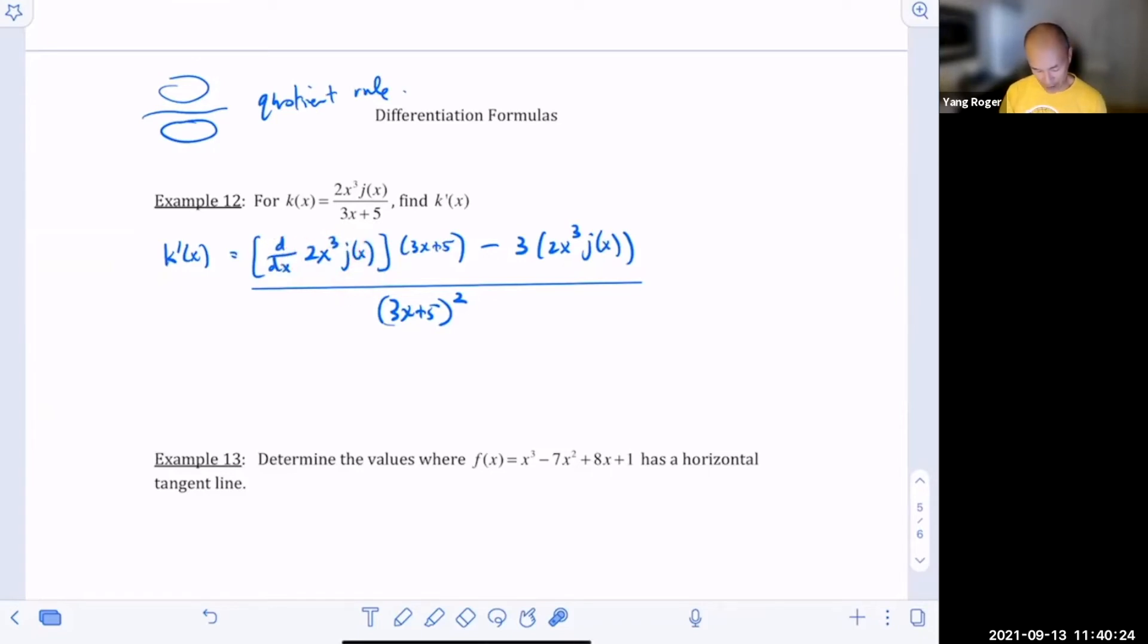This is a product rule, right? Because when you look at this, it's like this is something times something, where one thing is the 2x cubed and the other thing is the j of x. So I kind of need to train you, so you can look at a function, a complicated function and say, oh, this is the fundamental rule, it's a quotient rule. And then, when you look inside those square brackets, you see, oh, this is a product rule. Like, I need that vision, and that's what I'm trying to train. That's the purpose of these examples.